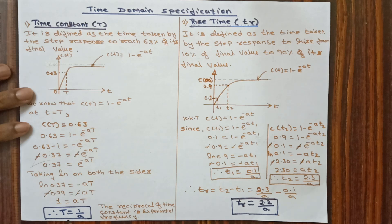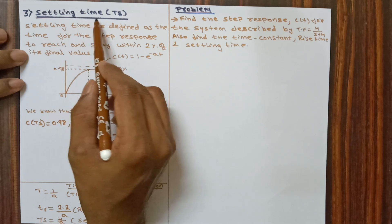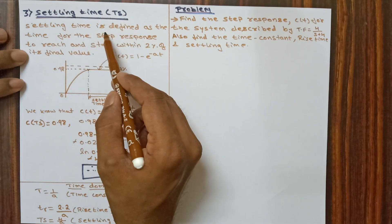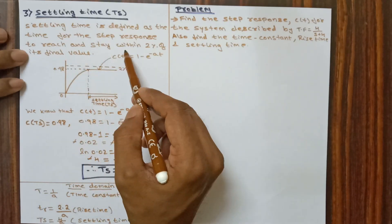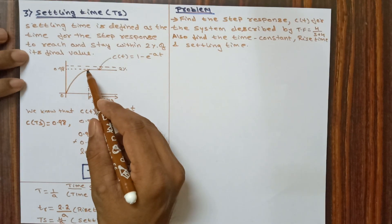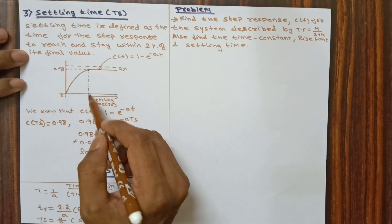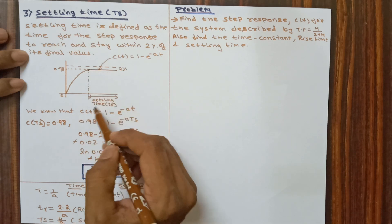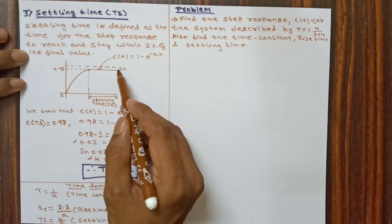To summarize so far: time constant T equals 1 by a, and rise time TR equals 2.2 by a. The next parameter is settling time, denoted by TS. Settling time is defined as the time for the step response to reach and stay within 2% of its final value. After passing through a transient period, it settles to a stable output, and that time is called settling time, with a 2% tolerance band.